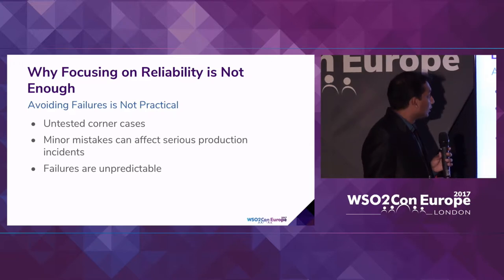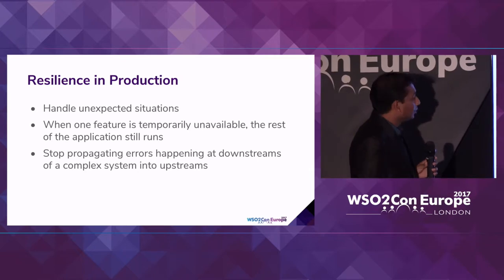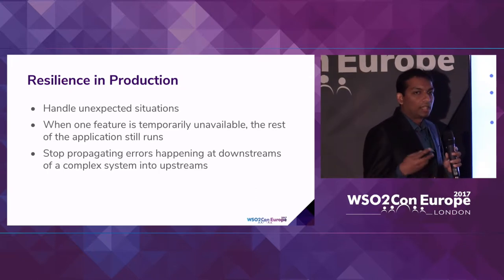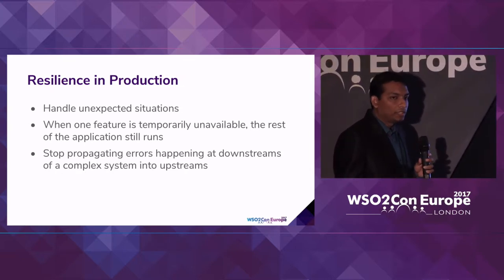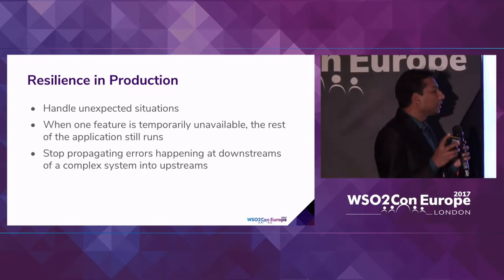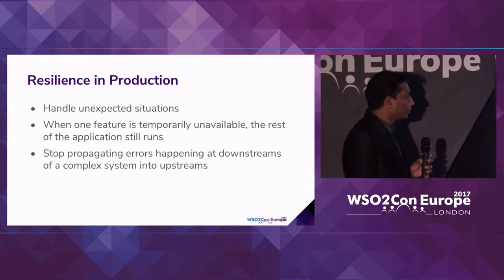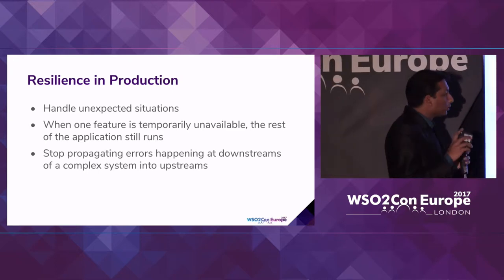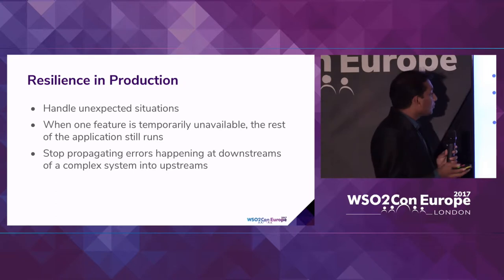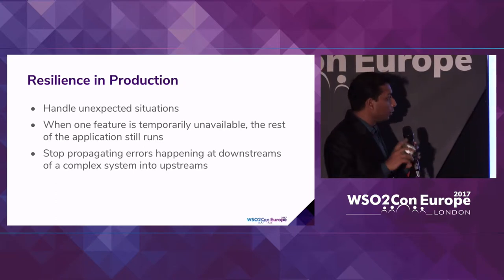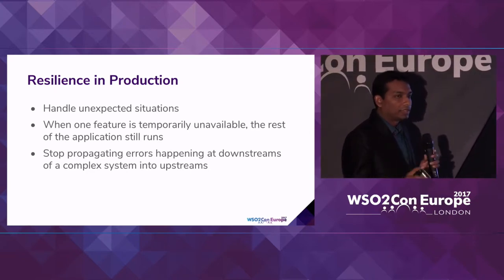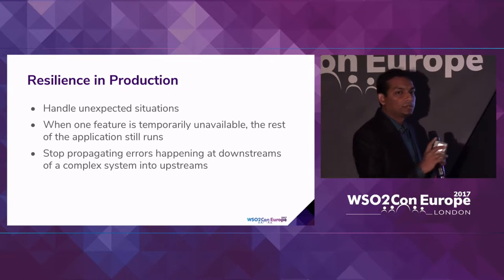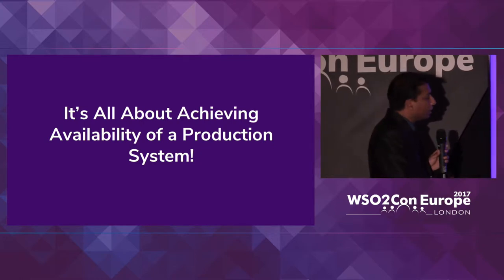That's why we need resilience. To achieve resilience in production, we first need to identify whether failures are happening. If failures are happening and nobody knows about it, you can't recover. That's why a silent failure is not good in production — we need monitoring to detect failures and take action. The ultimate goal of resilience in production is to prevent upstreams from being affected by errors happening in the downstream, handling those errors gracefully at the service level without exposing them to upstreams.